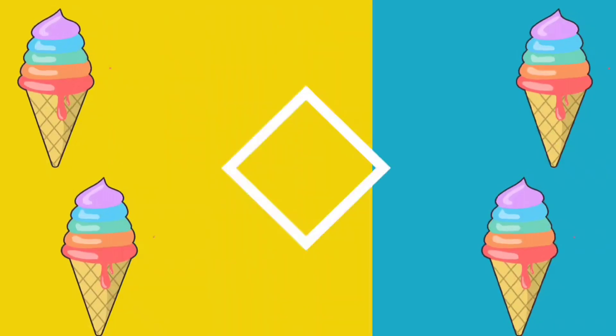G is for Grape, H is for Horse, I is for Ice Cream.